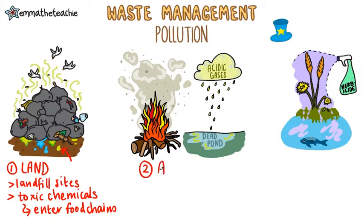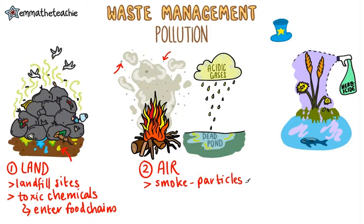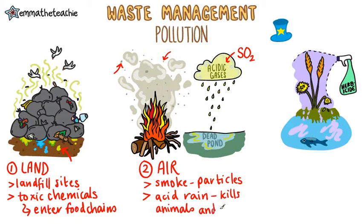The second type of pollution is air pollution. When we burn things, the smoke contains tiny solid particles that can hang around in our atmosphere. Humans and animals breathe them in, causing damage to the lungs. Acidic gases like sulphur dioxide are also formed when fossil fuels are burned. This then dissolves into rain water forming acid rain, which can kill animals and plants in lakes.